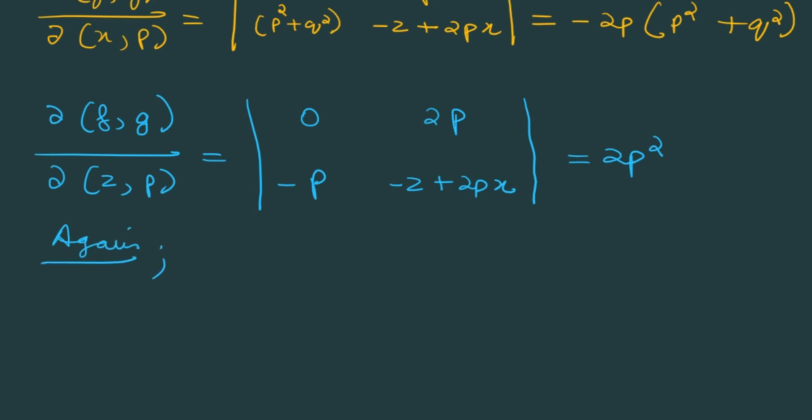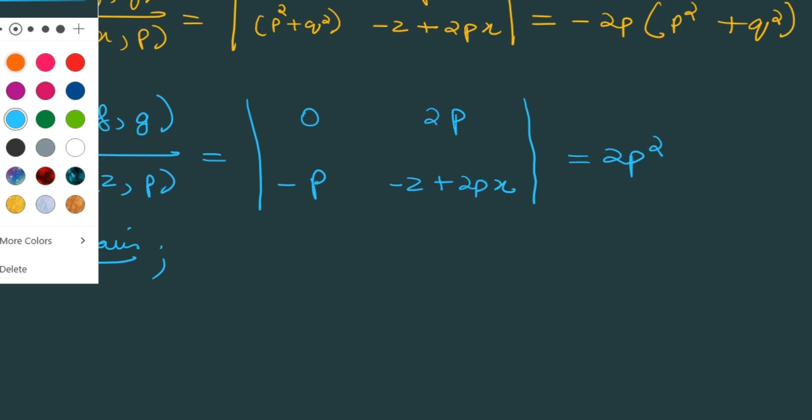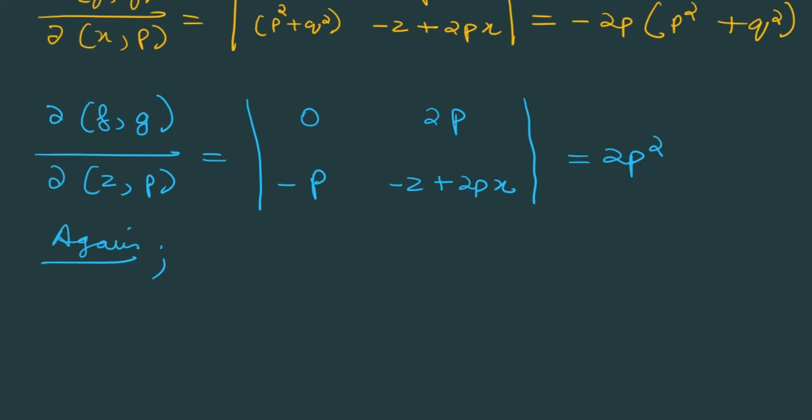Again, ∂(f,g)/∂(y,q) will be equal to |0, 0; 2q, 2qx| which is equal to 0.